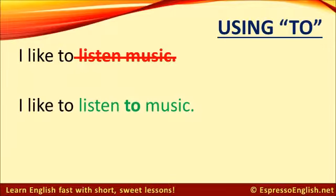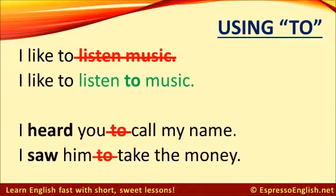Here's a place where students often forget to use 'to', but it's actually necessary. Don't say 'I like to listen music' — you need to say 'I like to listen to music'. However, don't use 'to' after the verbs 'hear' or 'see'. Don't say 'I heard you to call my name' or 'I saw him to take the money'. The correct sentences are: I heard you call my name, and I saw him take the money.